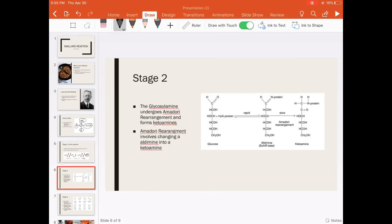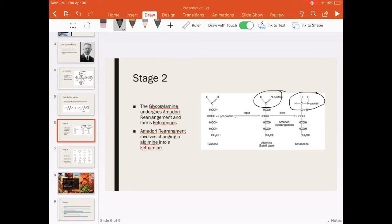Stage 2 of the reaction is when this newly formed glycosylamine goes through an Amadori rearrangement. This process involves the changing of an aldamine into its respective ketoamine. Aldamines and ketoamines are just an amino acid bonded to an aldose or ketose sugar.